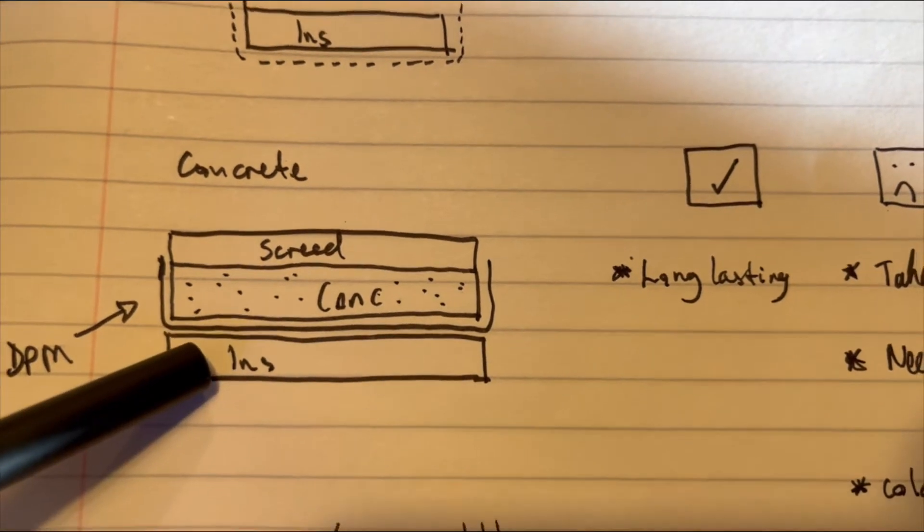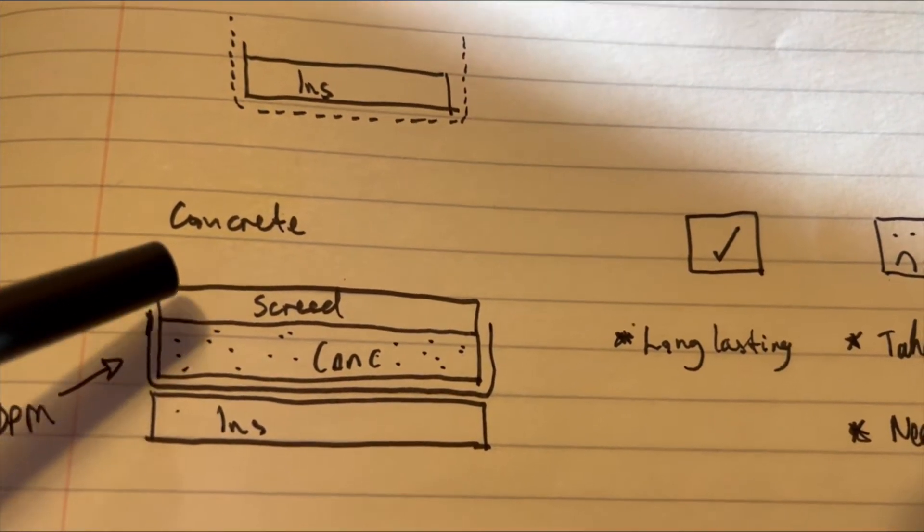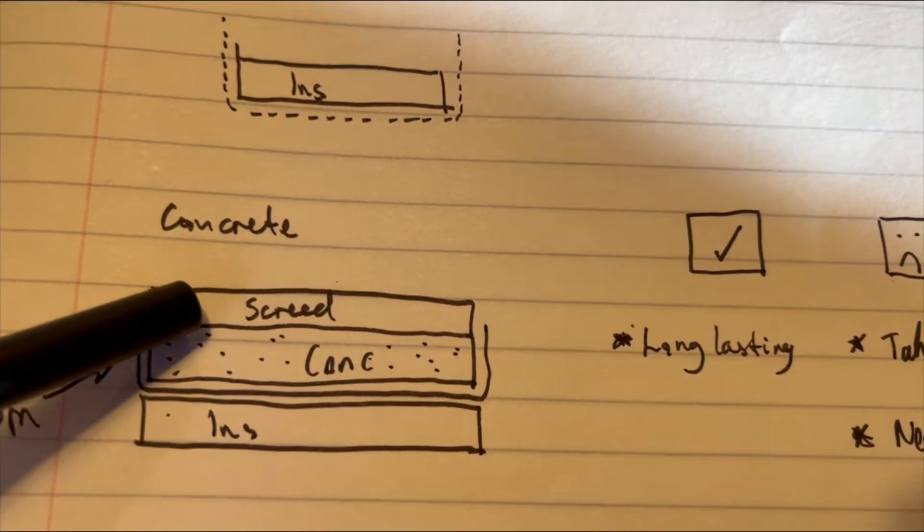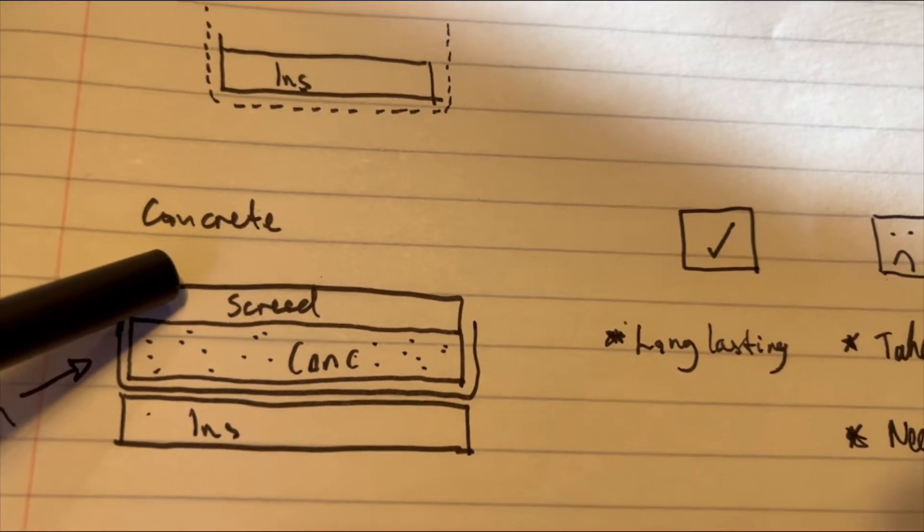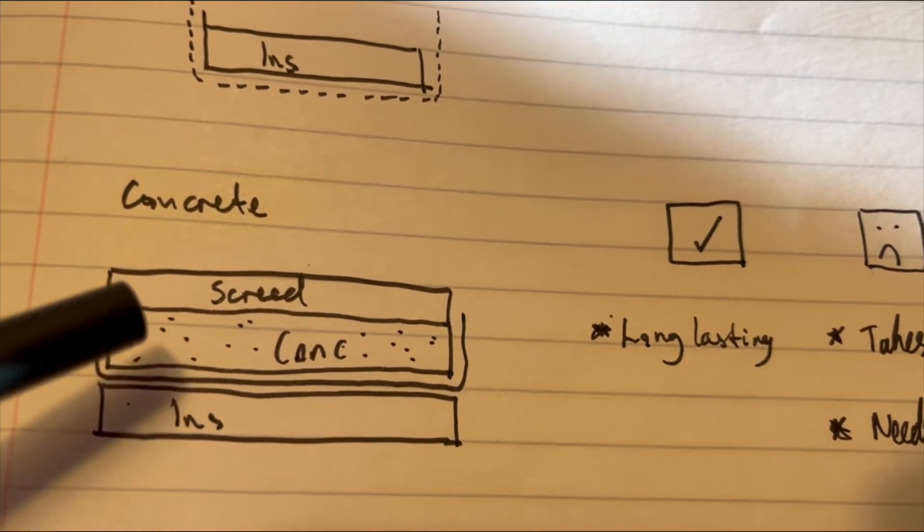The amount that you're going to have to dig out is going to be a lot because you've got 100 millimeters of insulation, you've got 100 millimeters of concrete, you've got 50 millimeters of screed, and then whatever flooring you're going to have on top of it. So that's the amount you're going to dig down. That's going to nearly be a foot to dig down.